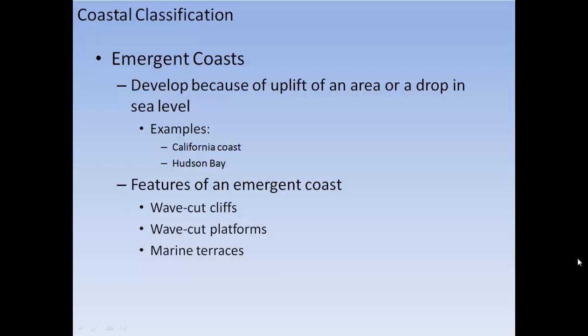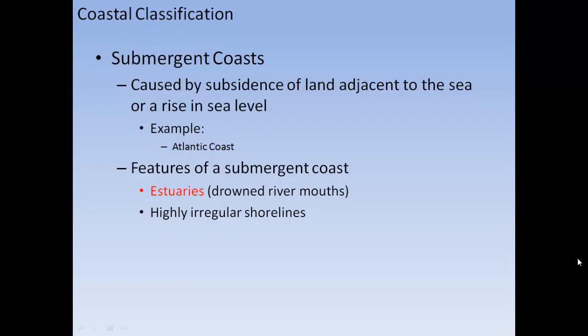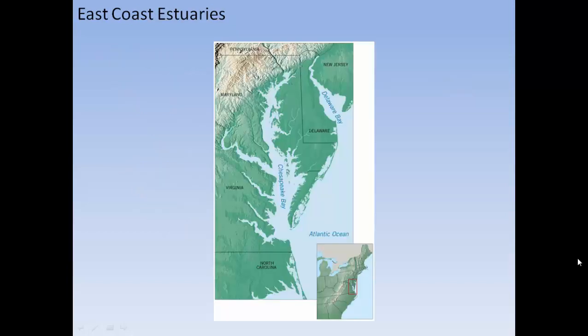Emerging coasts develop because of uplift or a drop in sea level — examples include the California coast and Hudson Bay. Features of emerging coasts include wave-cut cliffs, wave-cut platforms, and marine terraces. Submergent coasts, like the Atlantic coast, are caused by subsidence of land or a rise in sea level. Features of submergent coasts include estuaries, which are drowned river mouths, and highly irregular shorelines — examples include Chesapeake Bay and Delaware Bay.